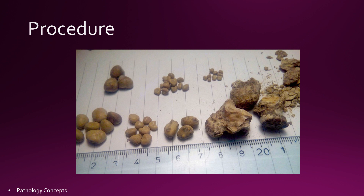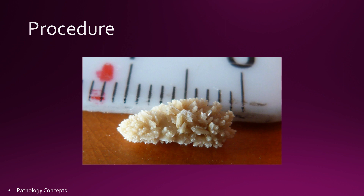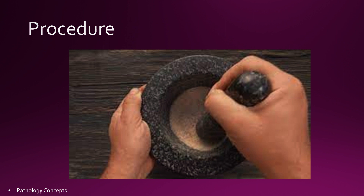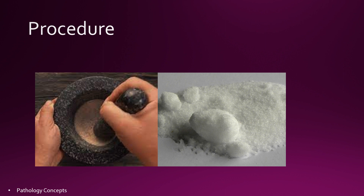Now let's learn the procedure of FTIR. Once you receive the stone, always note its shape, color, size, and weight. The stones submitted for analysis are washed with deionized water and dried at room temperature for 24 hours. Subsequently, the stones are powdered in a mortar and aliquoted into vials before being subjected to analysis.